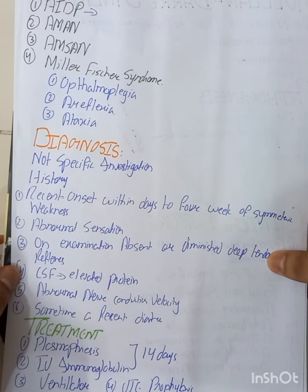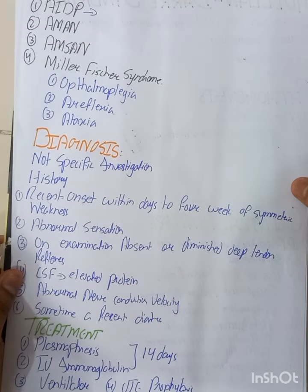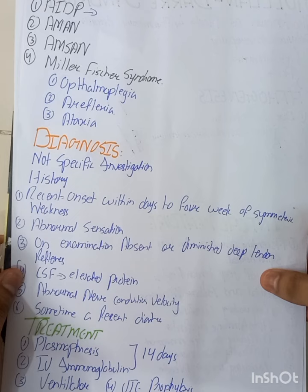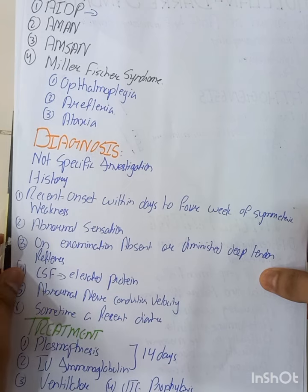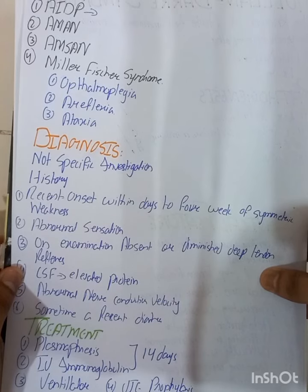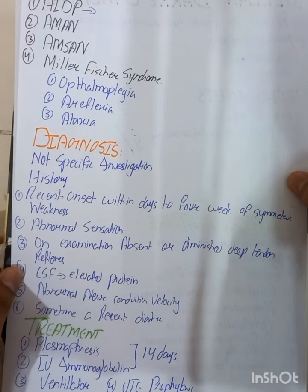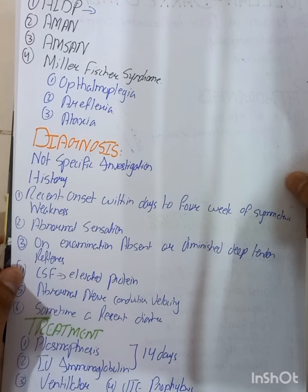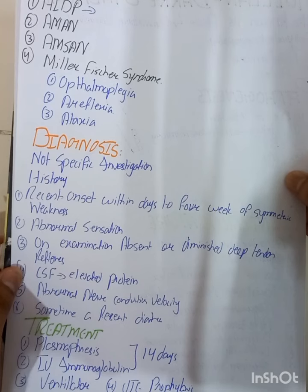There are no specific investigations for Guillain-Barré syndrome. Diagnosis is based on the patient's history: recent onset within days to four weeks of symmetrical weakness, and abnormal sensations like pain, tingling, pin-prick sensation, or insect-crawling inside the skin. On examination, absent or diminished tendon reflexes are found. Lumbar puncture shows elevated protein in the cerebrospinal fluid, and nerve conduction study shows abnormal nerve conduction velocity. A history of recent diarrhea or viral infection may also be reported.